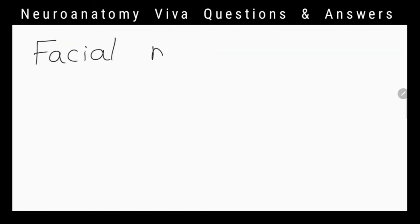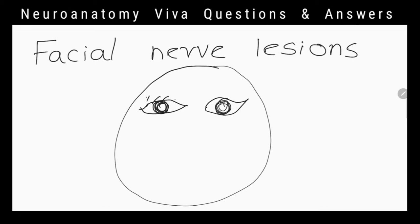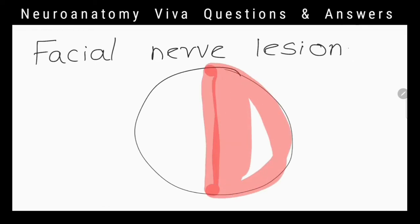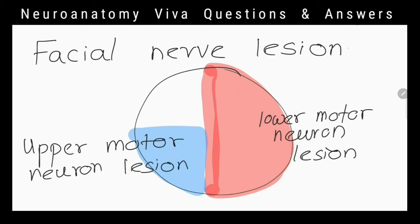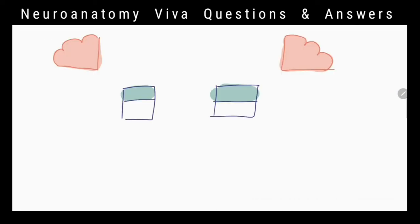What is the difference between upper and lower motor neuron lesions of facial nerve? All muscles of affected side of the face will be paralyzed in lower motor neuron lesion, but in upper motor neuron lesion only the muscles of lower part of the face will be paralyzed on opposite side. Why opposite side?